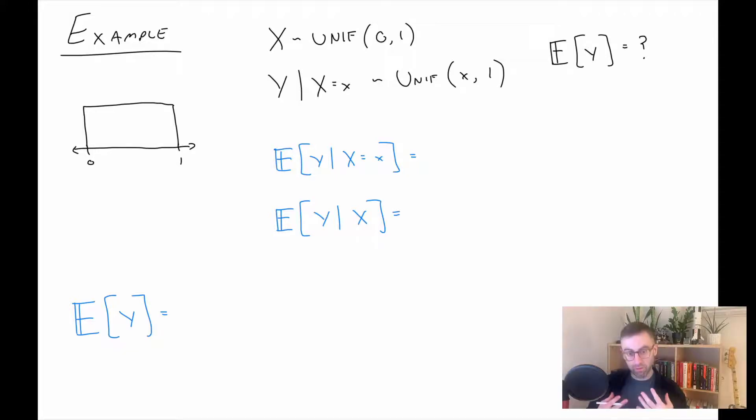So basically the way to think of this is: first generate a random observation from X, maybe something like here, and then that means that Y is then uniform between there and one. So basically depending on what we get from X, there's a different distribution for Y. And ultimately what we want is the expected value of Y.